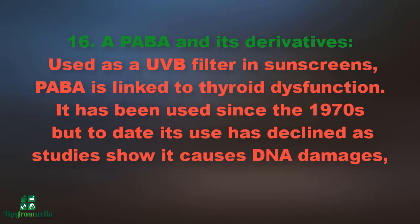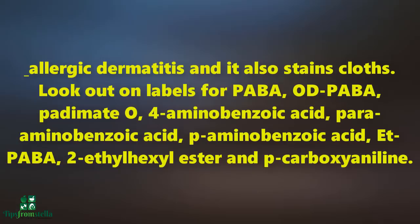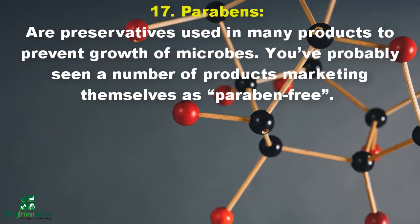Number sixteen: PABA and its derivatives. Used as a UVB filter in sunscreens. PABA has been used since the 1970s but its use has declined as studies show it causes DNA damage, allergic dermatitis, and stains clothes. Look out on labels for PABA, padimate O, 4-aminobenzoic acid, aminobenzoic acid, p-aminobenzoic acid, ethyl PABA, 2-ethylhexyl ester, and p-carboxyaniline.